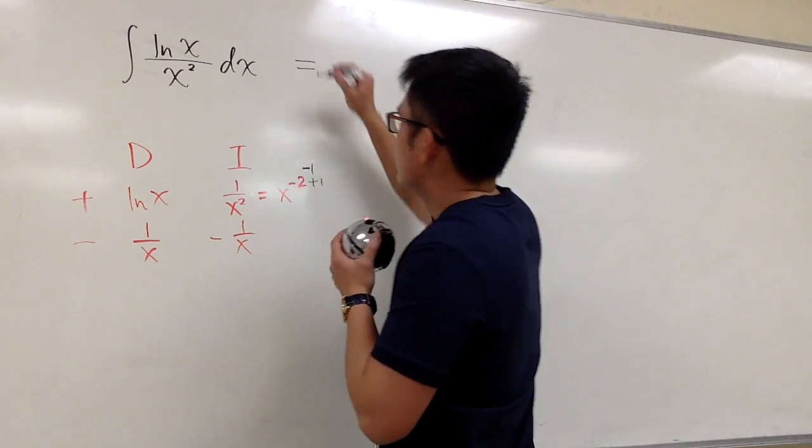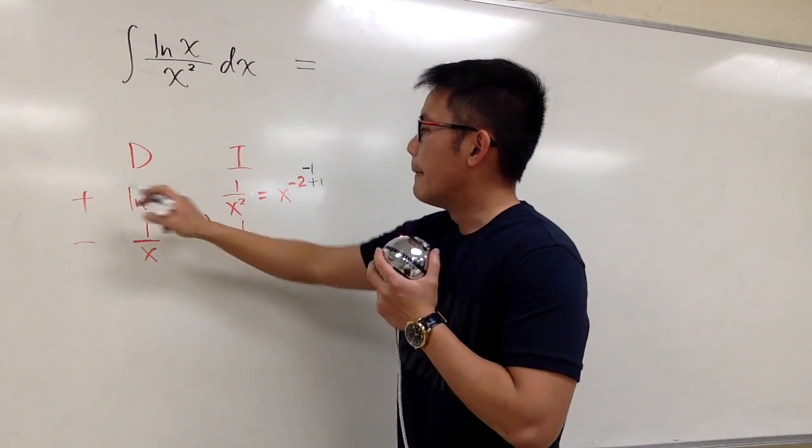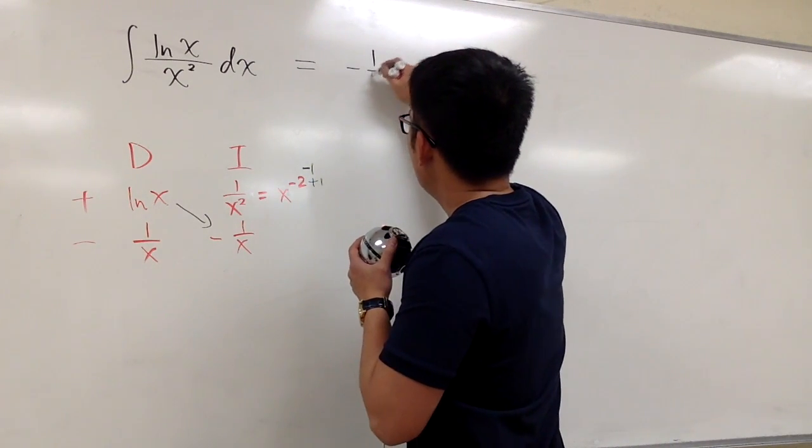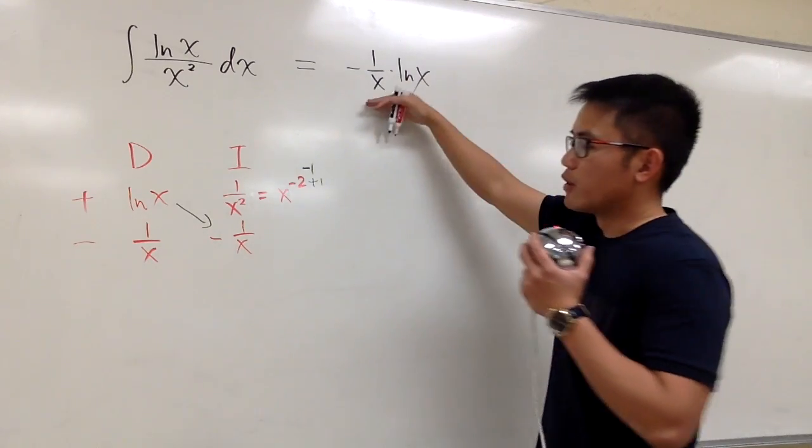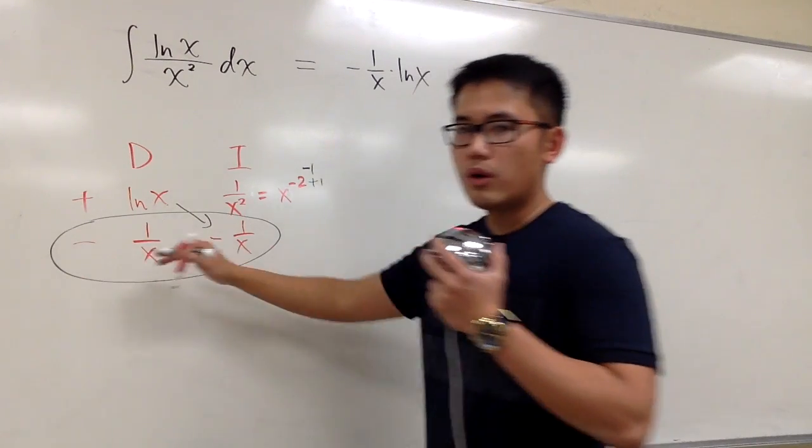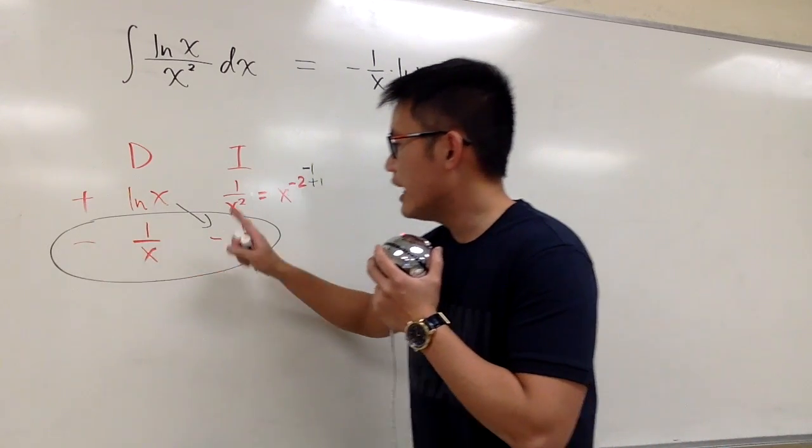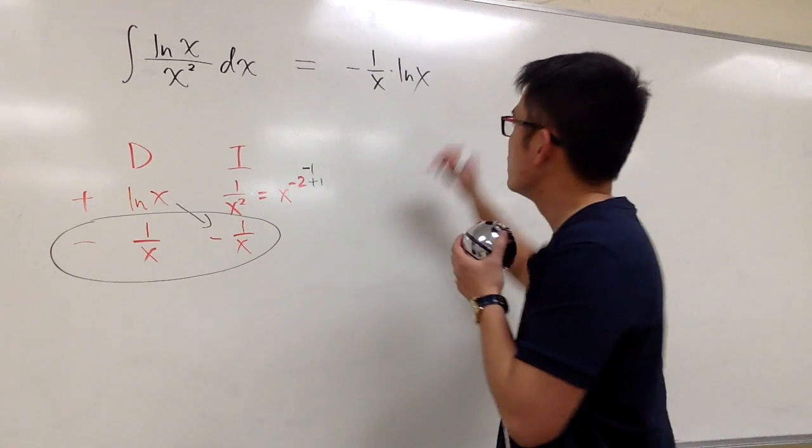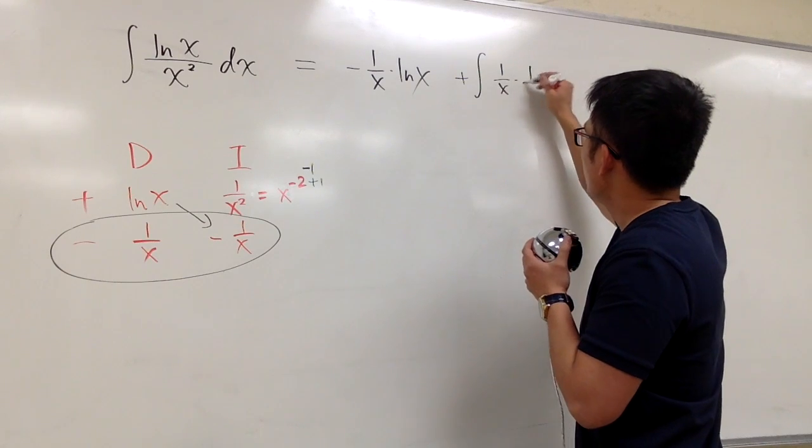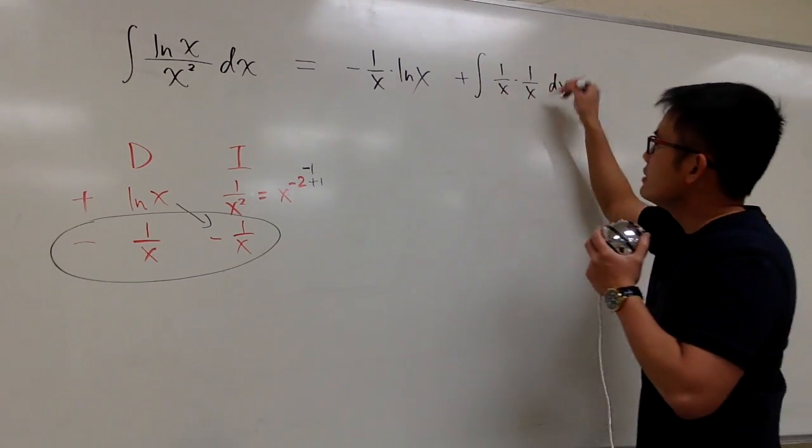Now, this is the continuation. The answer power-wise, it will be this times that. Positive ln(x) times negative 1 over x, and let me put it down like this. Negative 1 over x times ln(x), this is the first part of the answer. And then, the product of a row is still an integral. Be sure you multiply the negative and the negative. That will give you a positive integral. Positive integral 1 over x times 1 over x. And because this is the integral, let's put down a dx.